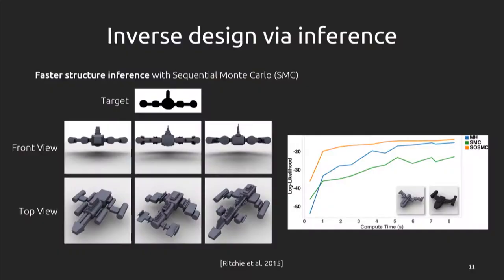We can also swap the inference engine out for sequential Monte Carlo. For some shape-matching problems — here I have a simplified generative model of abstract spaceships with a constraint that the spaceship look like a particular profile from the front, but free to do whatever it wants from other angles — sequential Monte Carlo can produce well-matching results much faster and more reliably than a random walk Metropolis-Hastings sampler.